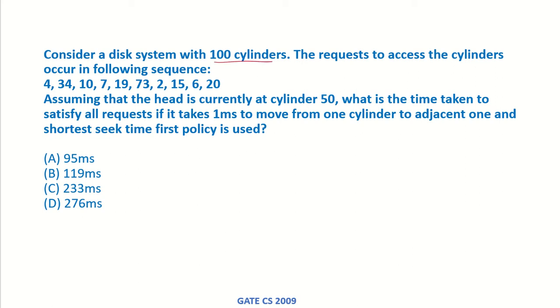Consider a disk system with 100 cylinders. The requests to access the cylinders occur in the following sequence: 4, 34, 10, 7 and so on. Assuming that the head is currently at cylinder 50, what is the time taken to satisfy all requests if it takes 1 millisecond to move from one cylinder to the adjacent one and shortest seek time first policy is used?